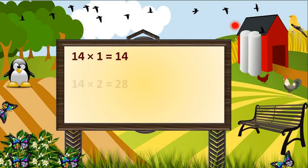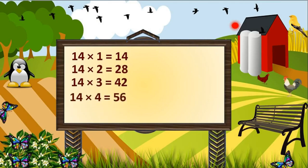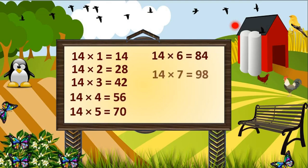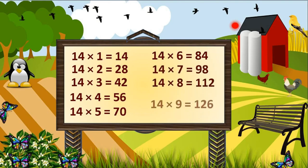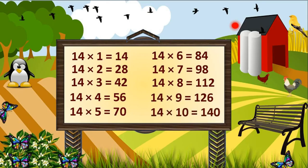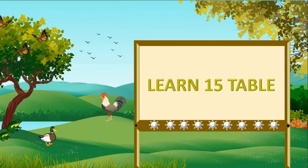14×1 is 14, 14×2 is 28, 14×3 is 42, 14×4 is 56, 14×5 is 70, 14×6 is 84, 14×7 is 98, 14×8 is 112, 14×9 is 126, 14×10 is 140.